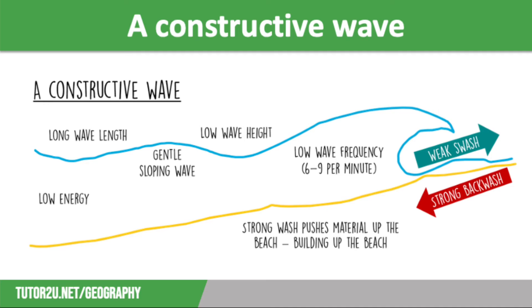Waves are either constructive or destructive. Constructive waves have a weak backwash compared to the swash. They have a long wavelength but low wave height. They also have less frequent but gentle waves, with six to nine waves per minute. They break gently, spreading out over a wide area, and are found in sheltered bays, which means they build up sandy beaches. They are more common in summer than winter and add material to the beach, building it up — hence being called constructive.